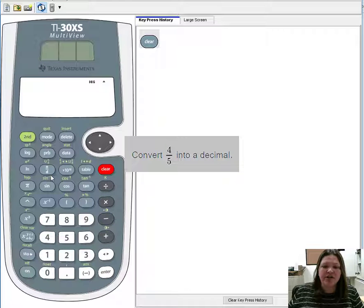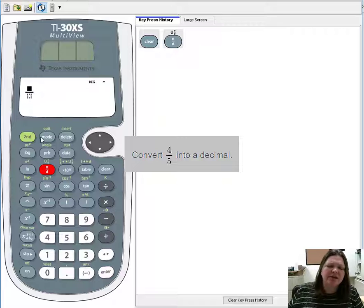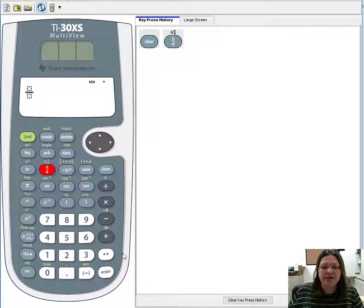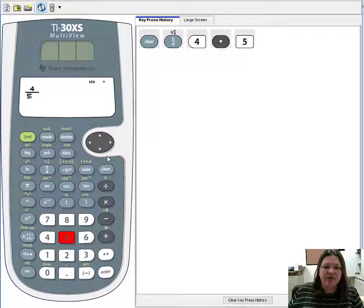So I want to put in a fraction, so I'm going to use my n/d button. And I do notice that I have that beautiful horizontal fraction bar. If you didn't have that one, it would be because of the mode you're in. Make sure you're in math print mode for fractions. And it was 4/5 I wanted to put in. So I'll put in 4 on the top, 5 on the bottom.